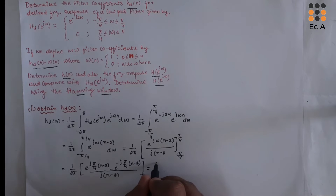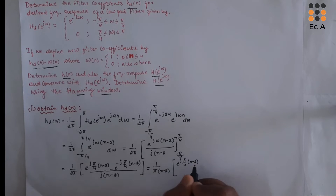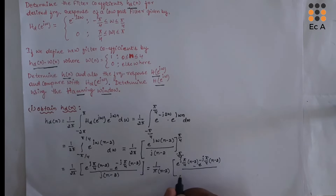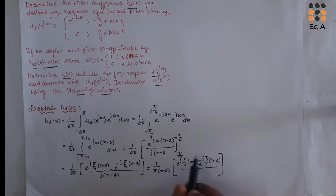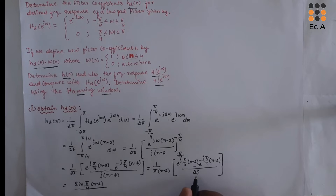Rearranging this equation, we write 1 by π times the quantity e^(j·π/4·(N−2)) minus e^(−j·π/4·(N−2)) divided by 2j. This entire term can be written as sin(π/4 · (N−2)), giving us sin(π/4 · (N−2)) divided by π(N−2).